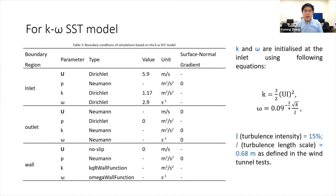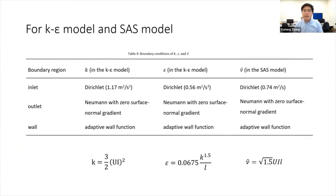For boundary conditions, a uniform inlet velocity of 5.9 m/s was used as described in the wind tunnel report. K and Omega are both initialized using standard equations. Wall functions are applied for wall patches of the domain, but K is configured with a fixed value of zero at the bridge surface, as the mesh is fine enough to resolve the viscous sublayer. Simulations using the K-Epsilon and Spalart-Allmaras models have identical boundary conditions for U and P, with Epsilon and nu-tilde initialized using their respective equations.